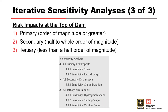In your documentation, it can be helpful to organize the results of the sensitivity analysis into categories ranked by their impact on the risk of overtopping. The results can be organized based on the difference in annual exceedance probability (AEP), or you can also look at the intersection with the top of dam if that makes more sense for your project.